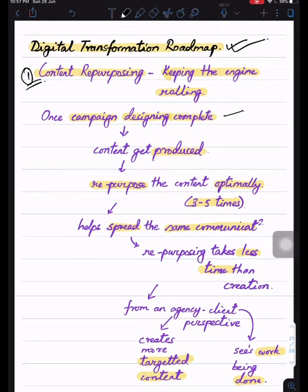Once the campaign design is completed and the content is produced, you need to understand how to optimally repurpose the content. For example, you might want to create three to five pieces of repurposed content.